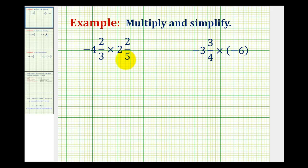Now we'll look at two examples of multiplying signed mixed numbers. When multiplying mixed numbers, the first step is to convert the mixed numbers to improper fractions.